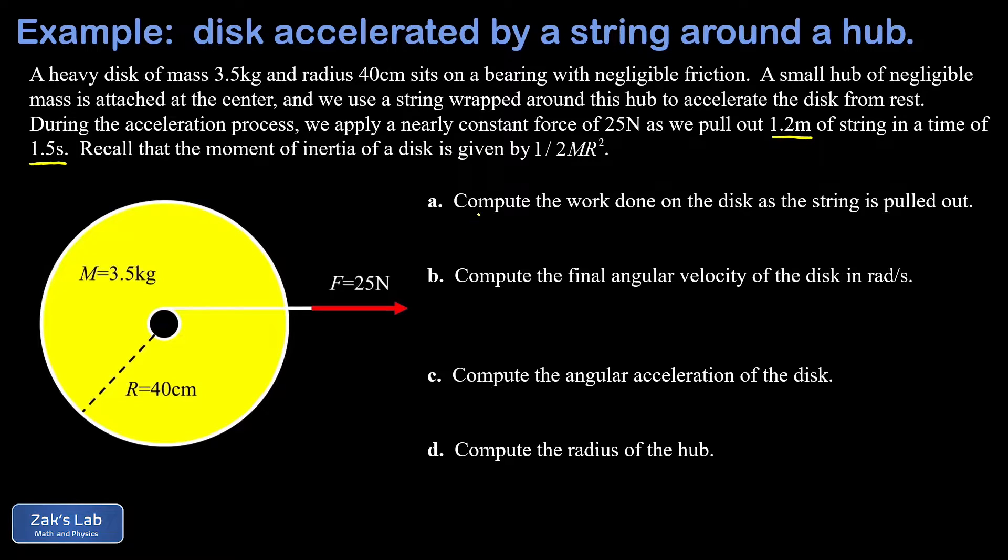So the work calculation is simple enough because our force is pulling exactly parallel to the displacement as we pull this string out. So our work is just going to be that parallel force multiplied by the displacement. So F parallel times delta X. The force was 25 newtons, the displacement 1.2 meters. And when we run the numbers on this, we get 30 newton meters or joules.